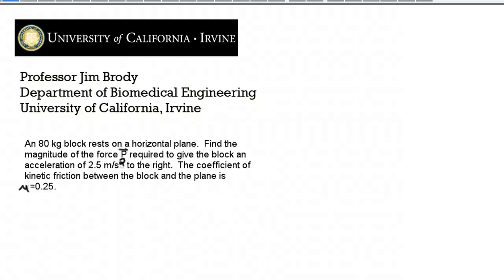Okay, here's today's problem. An 80 kilogram block rests on a horizontal plane. Find the magnitude of the force vector P required to give the block an acceleration of 2.5 meters per second squared to the right. The coefficient of kinetic friction between the block and the plane is mu equals 0.25.